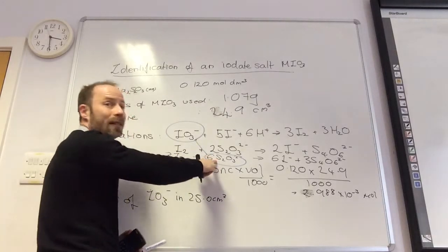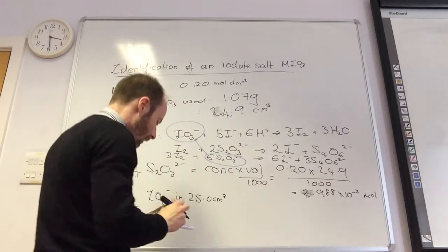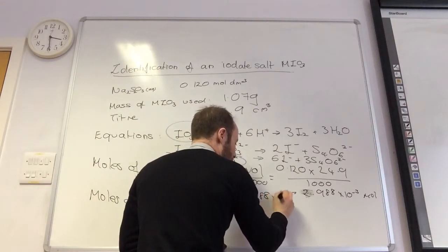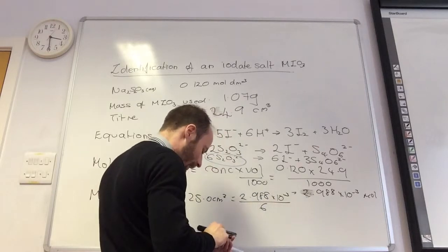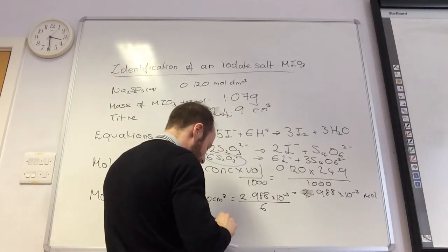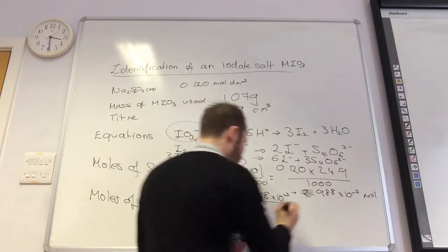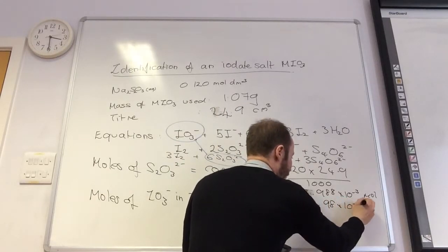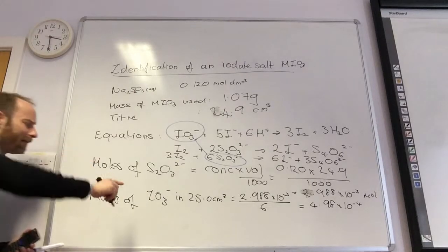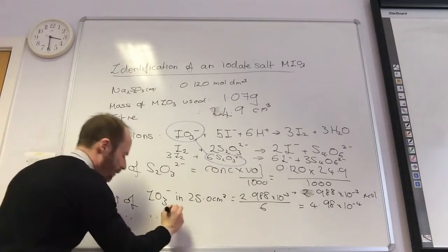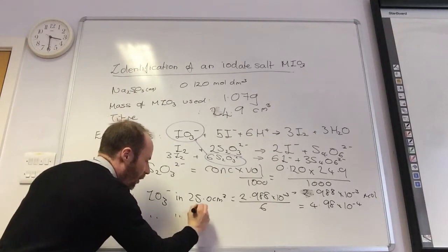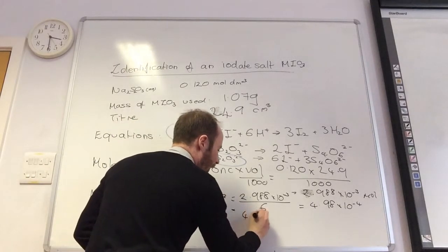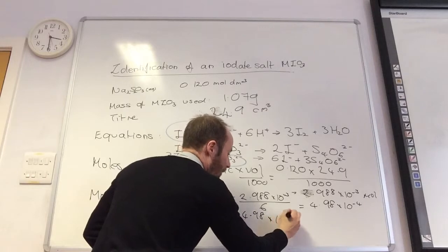So it's equal to 2.988 times 10 to the minus three divided by six. That equals 4.98 times 10 to the minus four. But that was in 25 centimeters cubed, so in 250 centimeters cubed, it is 4.98 times 10 to the minus three.